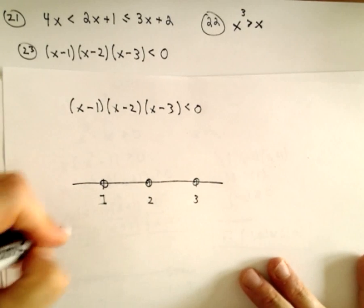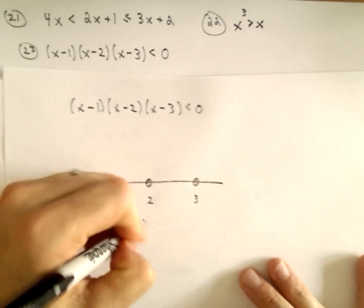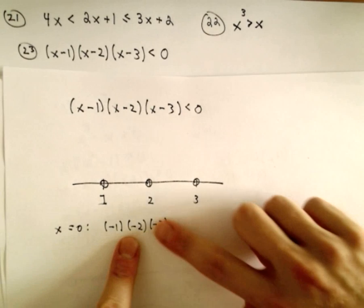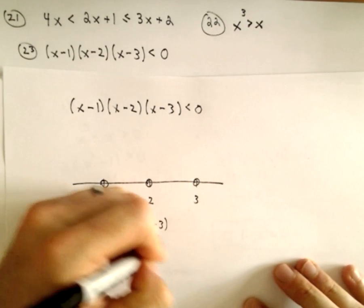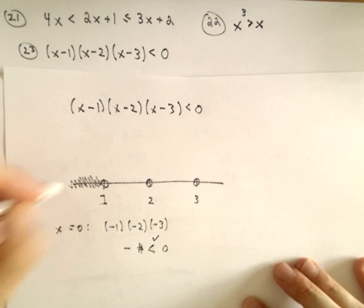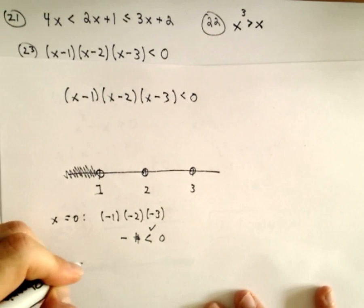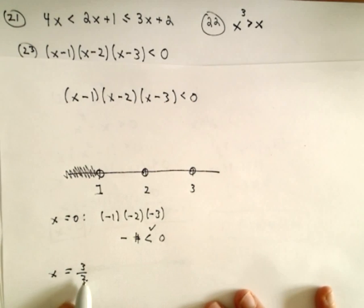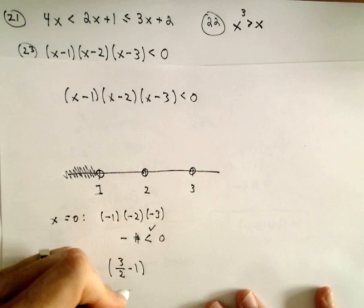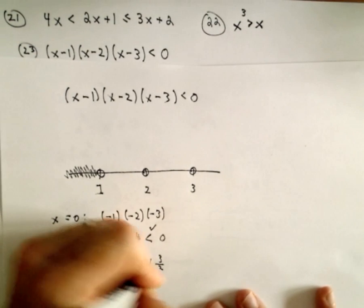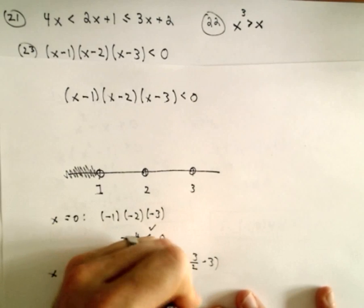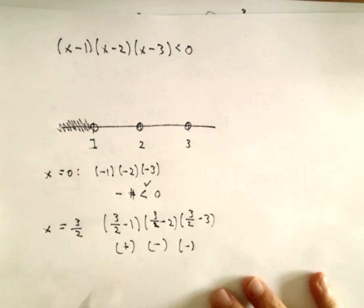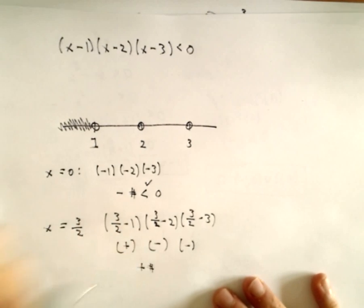If we plug in x equals 0, we get negative 1 times negative 2 times negative 3 — two negatives make a positive, but multiplied by another negative gives us a negative number — that's certainly less than 0, so every number smaller than 1 works. Using x equals three halves (between 1 and 2): we get three halves minus 1 (positive), three halves minus 2 (negative), three halves minus 3 (negative) — two negatives times a positive is positive, which is not less than 0. So numbers between 1 and 2 don't work.